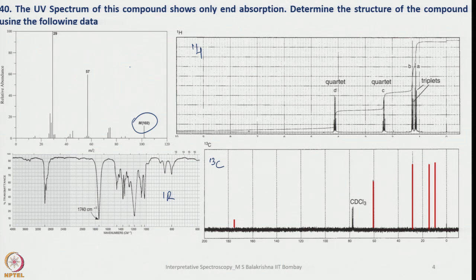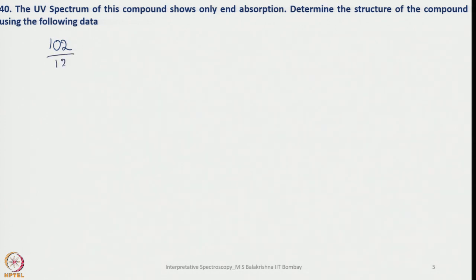With this data we should find out what molecule we are referring to. First, let us look at the molecular mass of 102. From this we have to try to arrive at a tentative molecular formula. We divide 102 by 13, which gives 7 remainder 11.